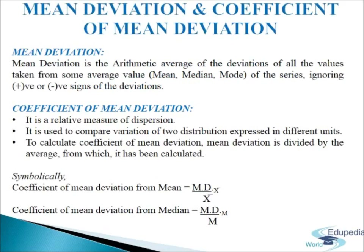Mean deviation. Interquartile range and quartile deviation suffer from a common defect: they are calculated by taking into account only two values of a series — either the extreme values as in the case of range, or the values of the quartiles as in the case of quartile deviation. It is always better to have a measure of dispersion which takes into account all the observations of a series and is calculated in relation to a central value. Mean deviation is such a measure of dispersion.